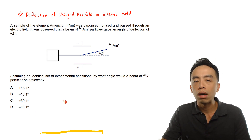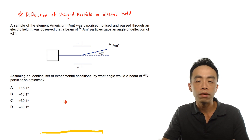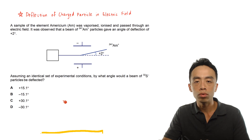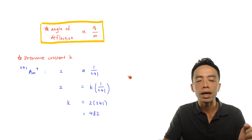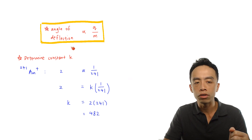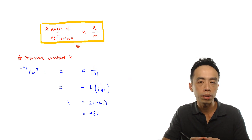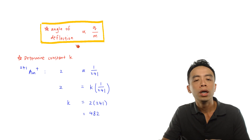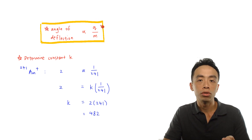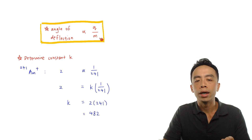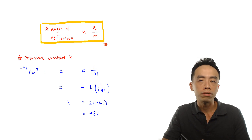The idea behind this question is actually pretty straightforward. The angle of deflection of a charged particle is related to its charge-to-mass ratio. The concept important here is: the angle of deflection of a charged particle through an electric field is related to its charge-to-mass ratio — Q, which is the charge, and M, which is the mass of that particle.